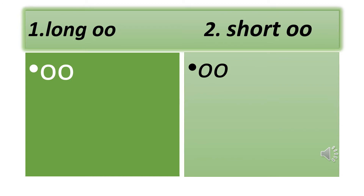Activity 18. Listen, point, and say. [Phoneme drill: B... oo, oo, oo — short 'uh' sound.]